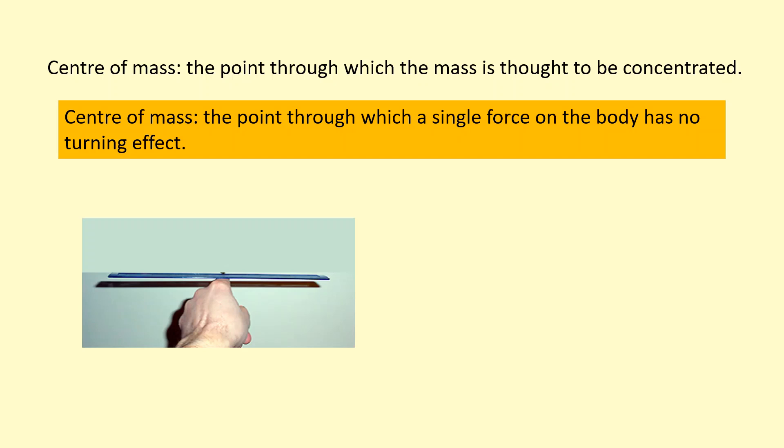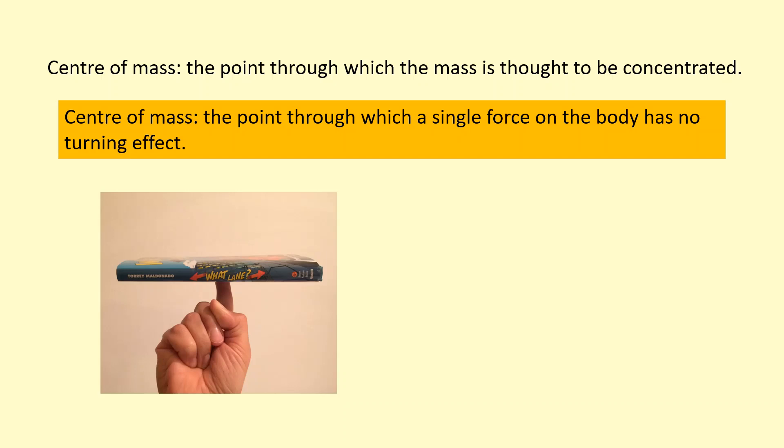A single force through this ruler here, it's not turning because there's no overall moment, so it's not spinning. Or, for example, with this book, when I apply a single force through this book, it doesn't turn. Why is that? The central mass is obviously here. In this case, it's because if I didn't apply...